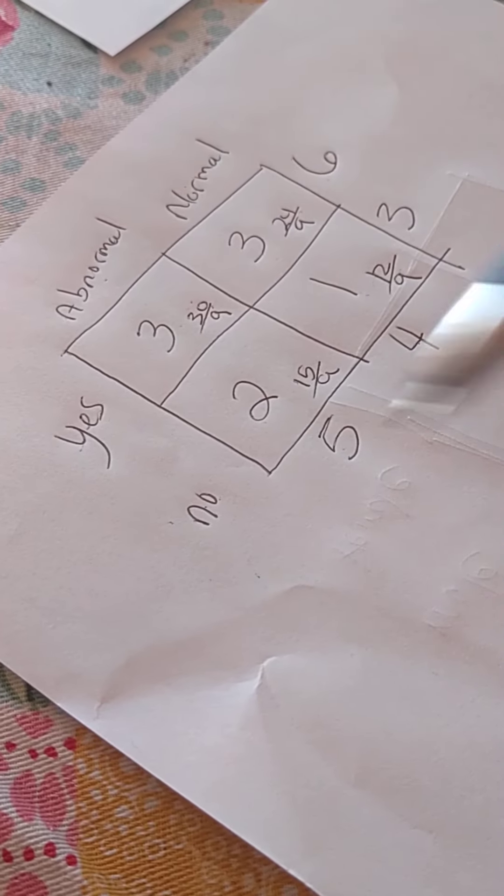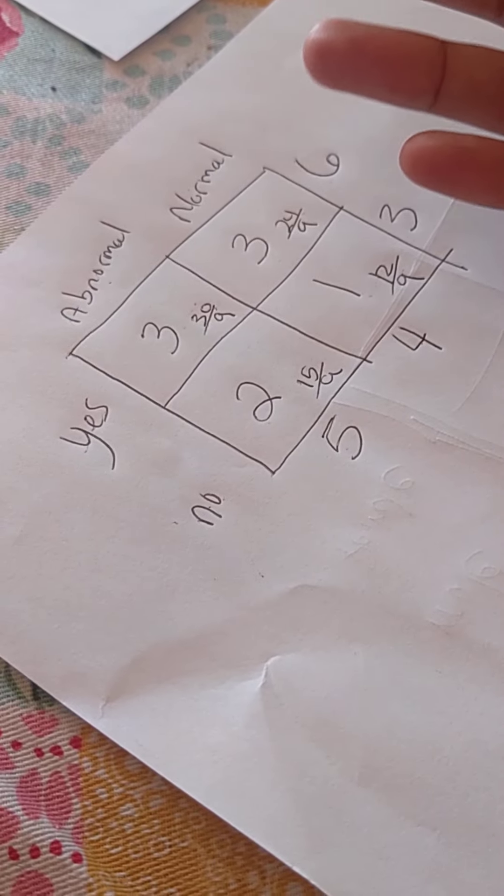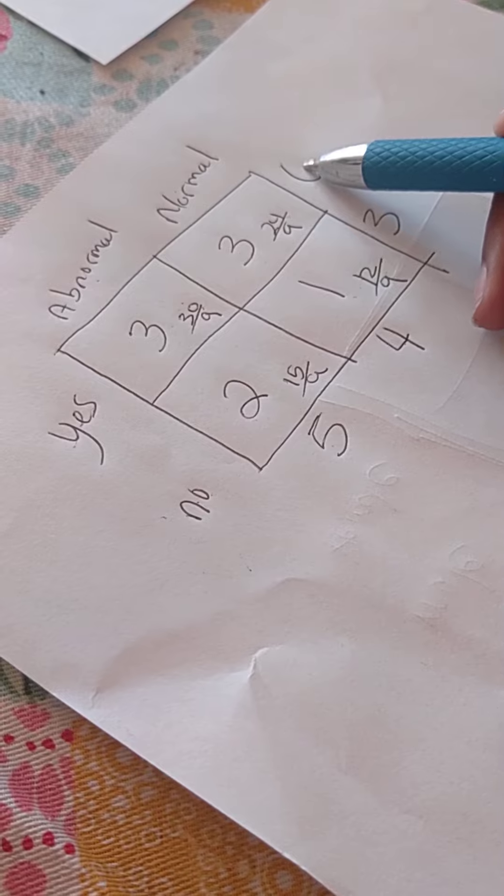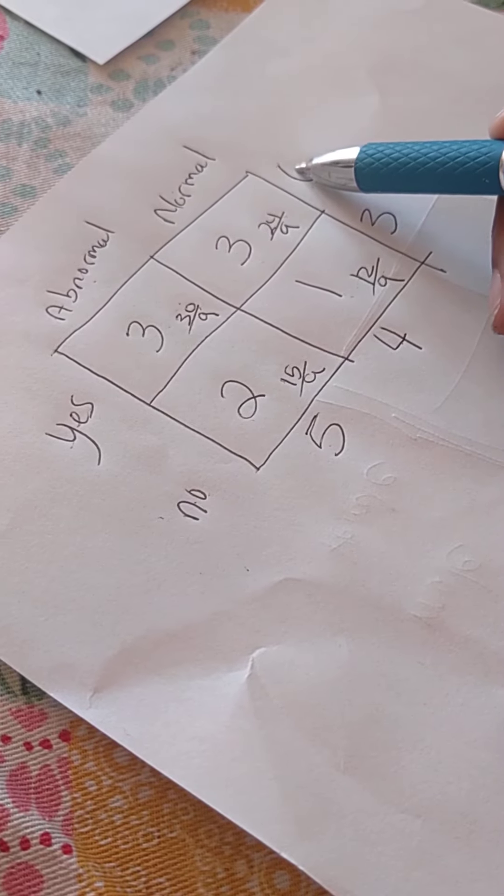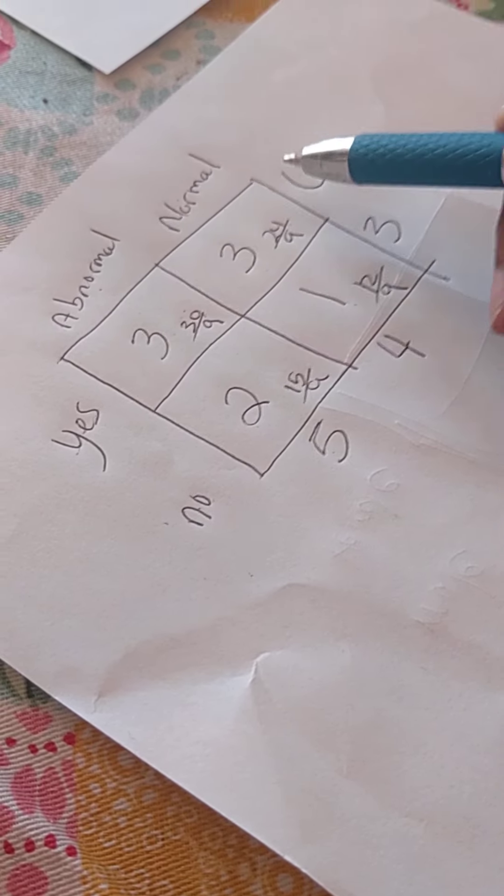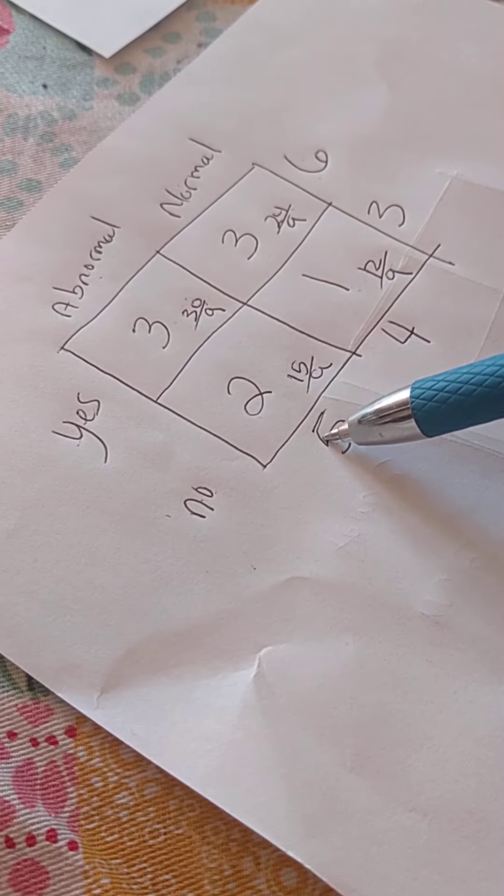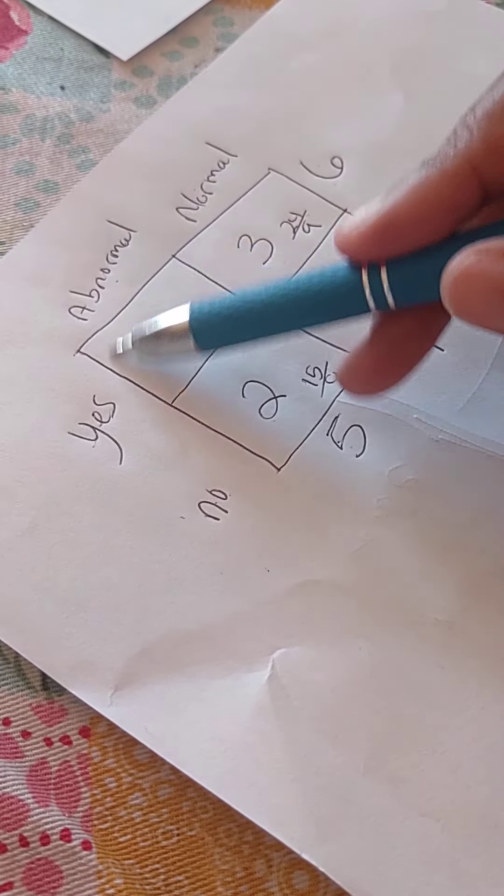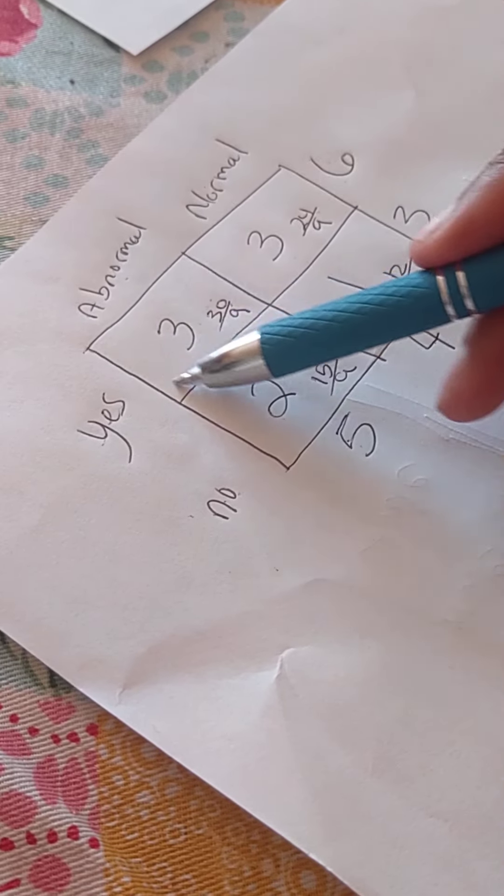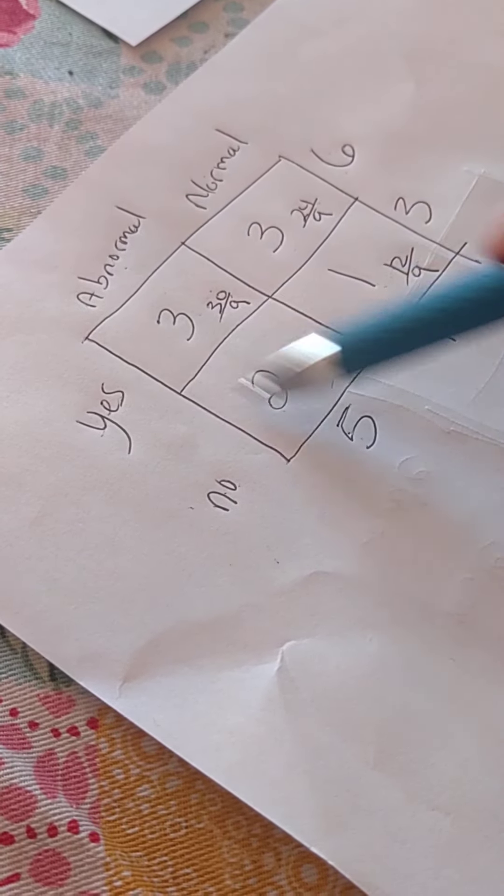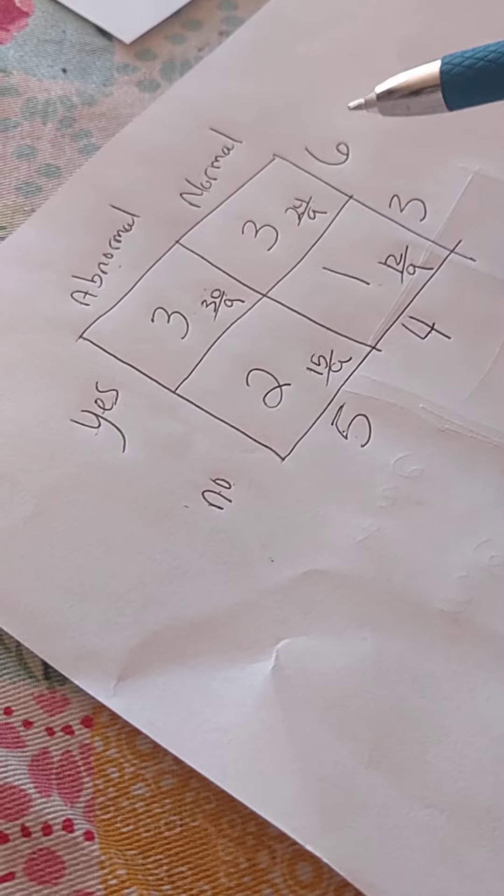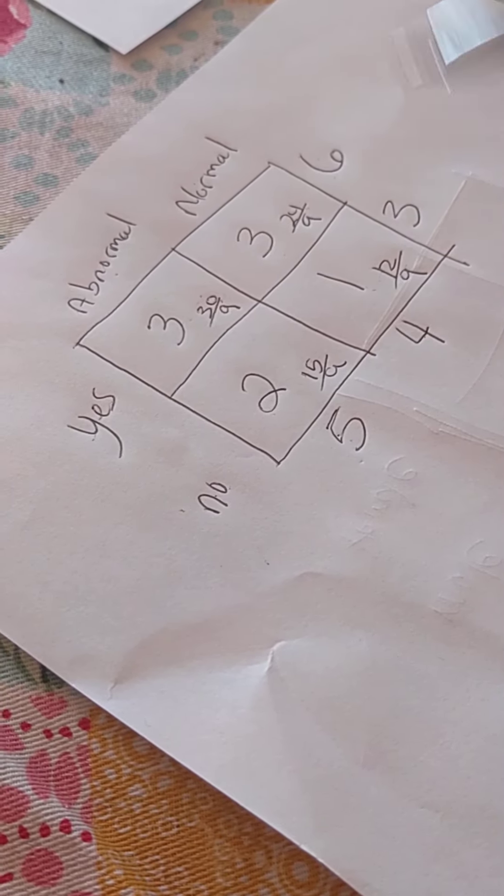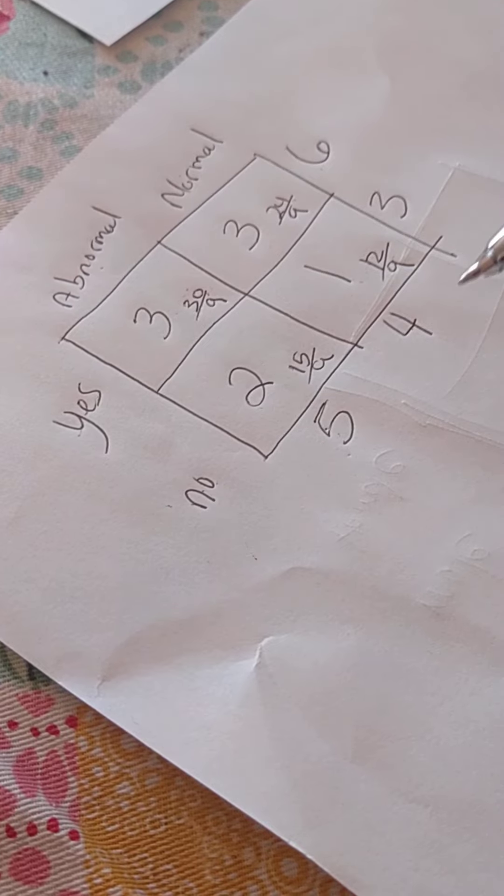So, for expected value, just remember, it's your total row times your column, excuse me, row times your column corresponding column. So, wherever the cell is in terms of coordinates, so it has row and column coordinates, you're going to multiply the corresponding totals and divide by the grand total to get the expected value.